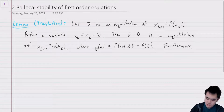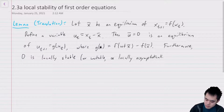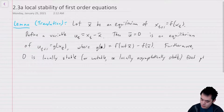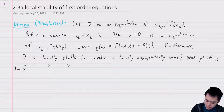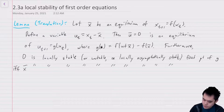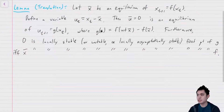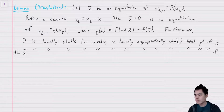Furthermore, zero is locally stable, or unstable, or locally asymptotically stable as a fixed point of g if and only if the same is true of x-bar as a fixed point of f. All we're doing with this change of variables is shifting everything so that the equilibrium x-bar is moved over to zero, which makes some analyses easier.